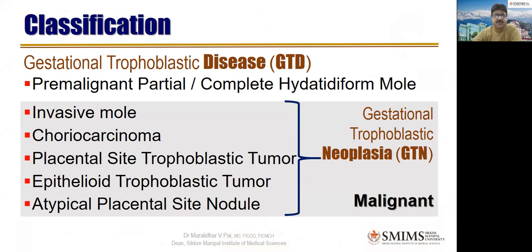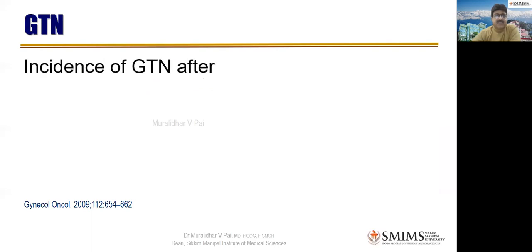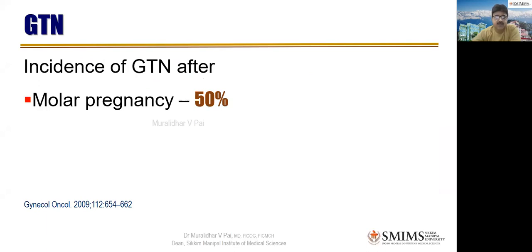As you know, when you say gestational trophoblastic disease, everything is included — including partial or complete premalignant hydatidiform mole. But when you say GTN, only invasive mole, choriocarcinoma, placental site trophoblastic tumor, epithelioid trophoblastic tumor, and atypical placental site nodule are included — and they are malignant either locally or metastatically. GTN occurs in molar pregnancy 50% of the time; the complete mole accounts for 15–20%, choriocarcinoma the rest.